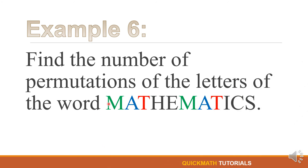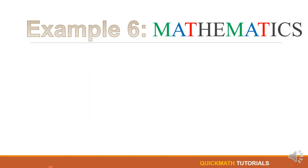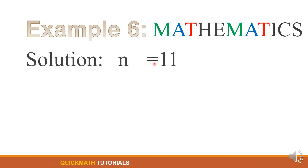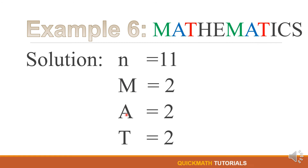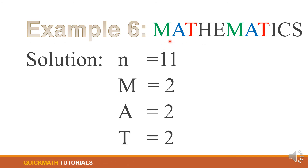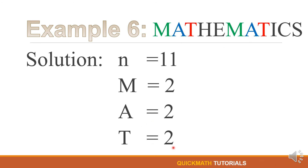For our next example, find the number of permutations of the letters of the word MATHEMATICS. For our solution, n is equal to 11 since there are 11 letters in the word MATHEMATICS. The repeating letters are M, A, and T. M appears 2 times, A appears 2 times, and T appears 2 times.